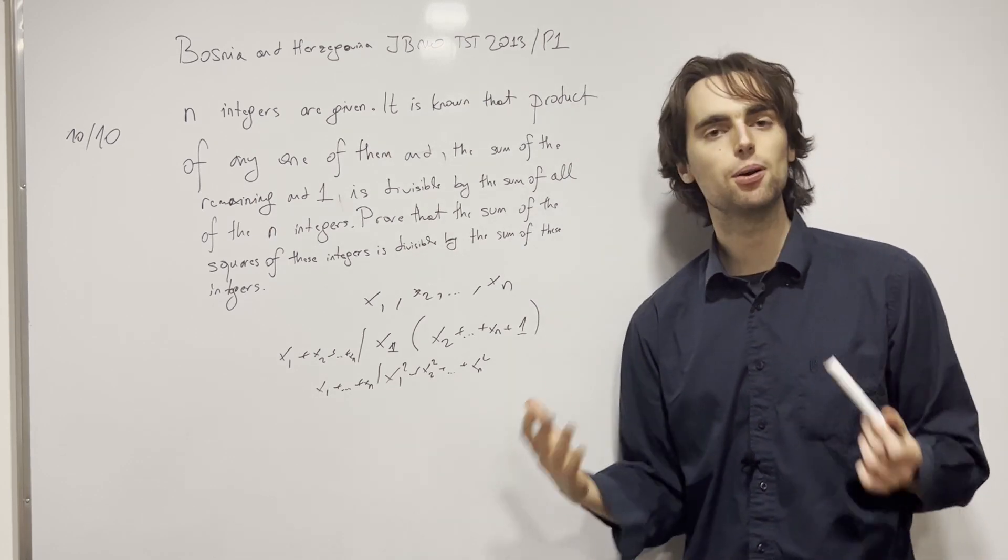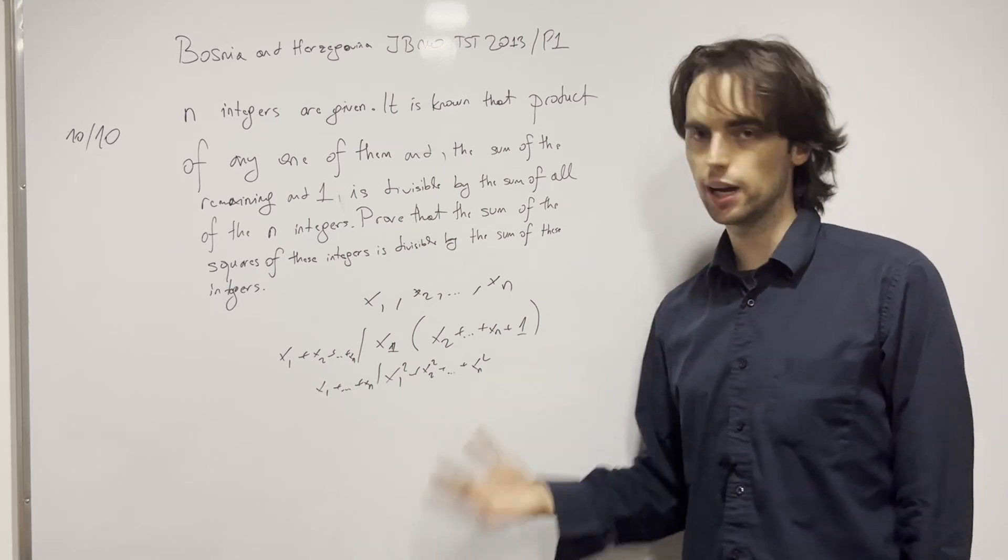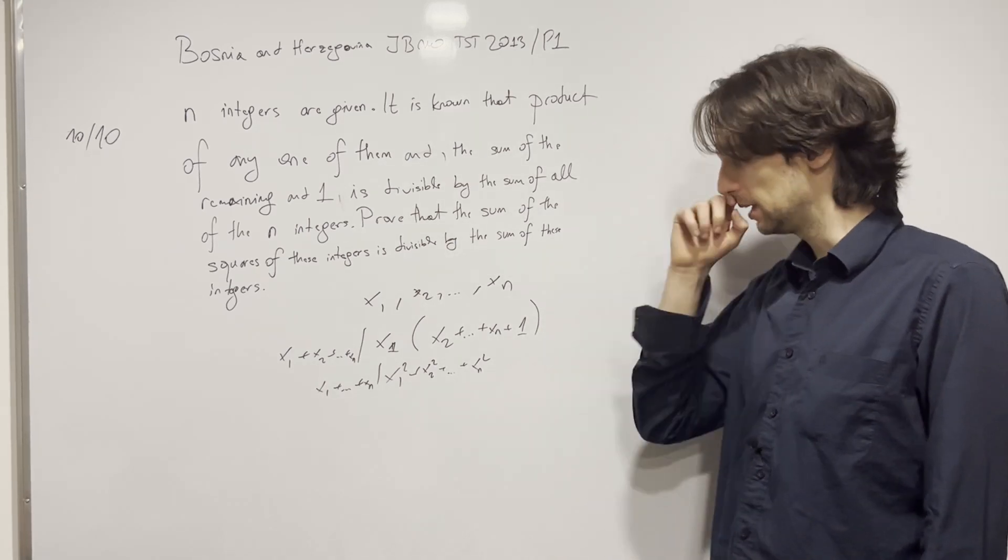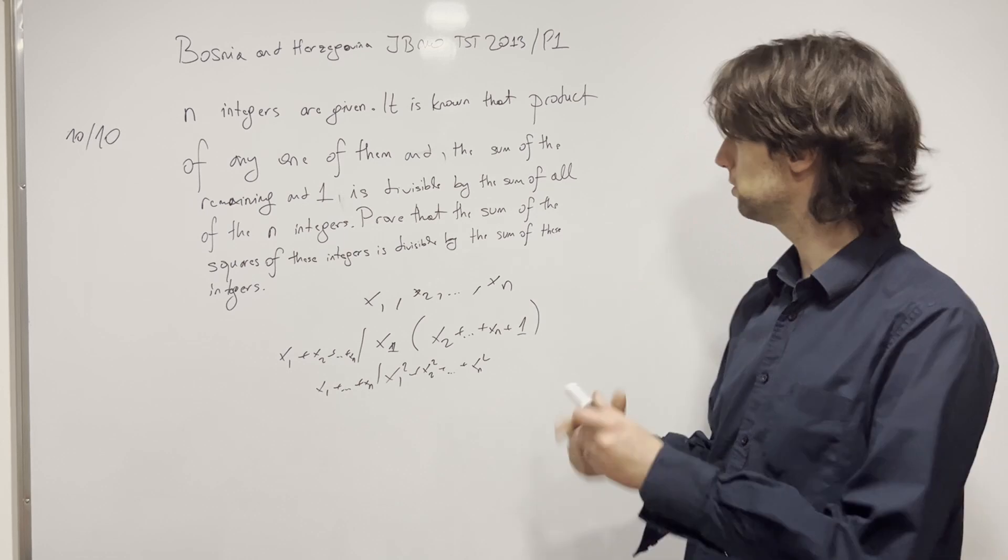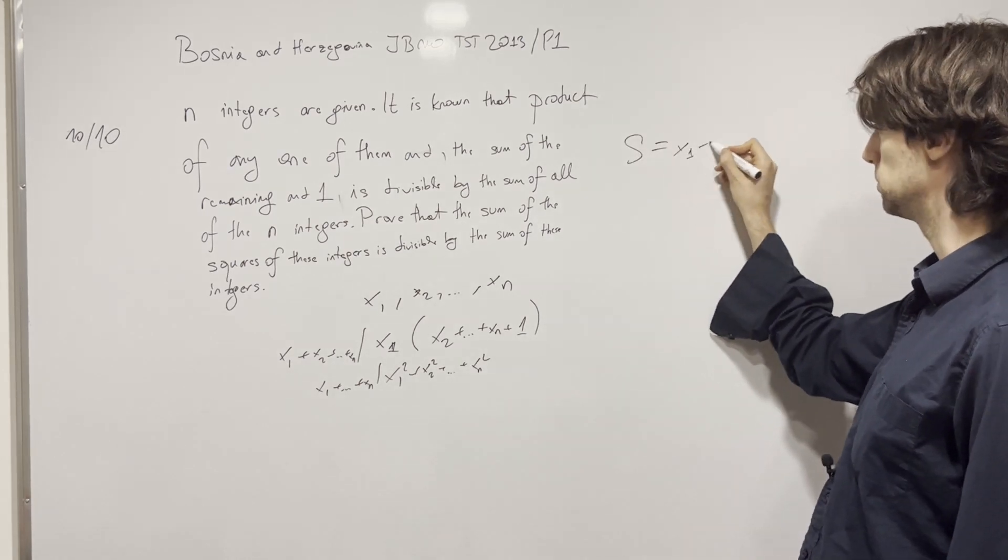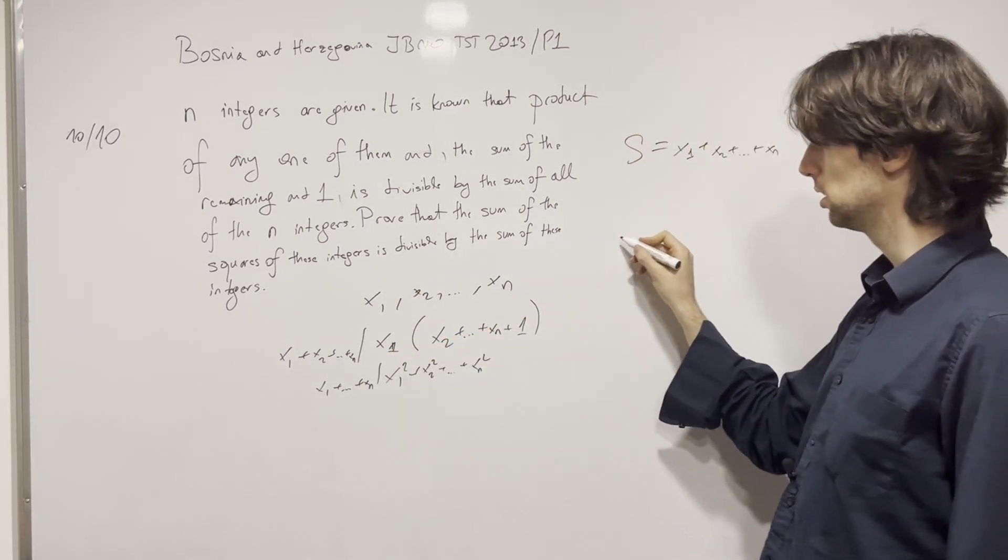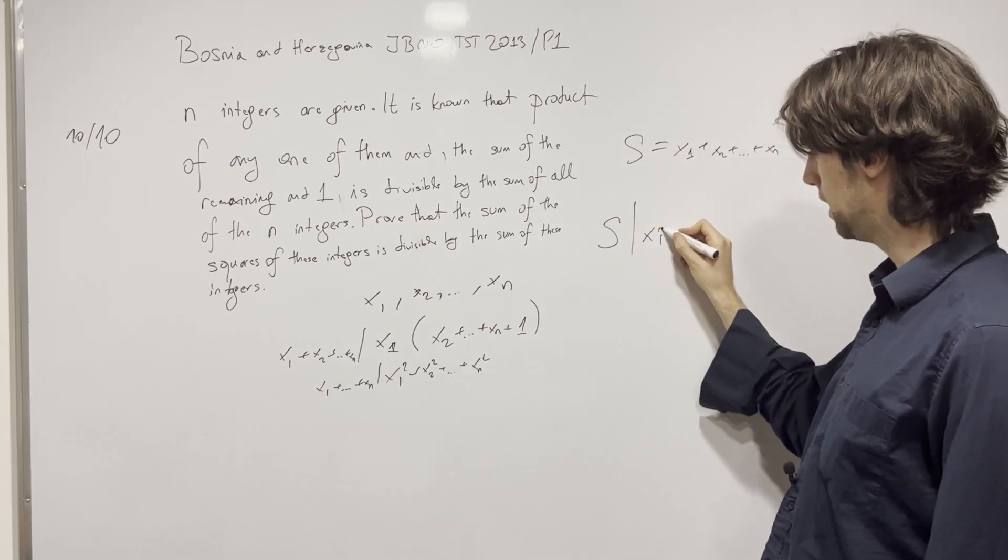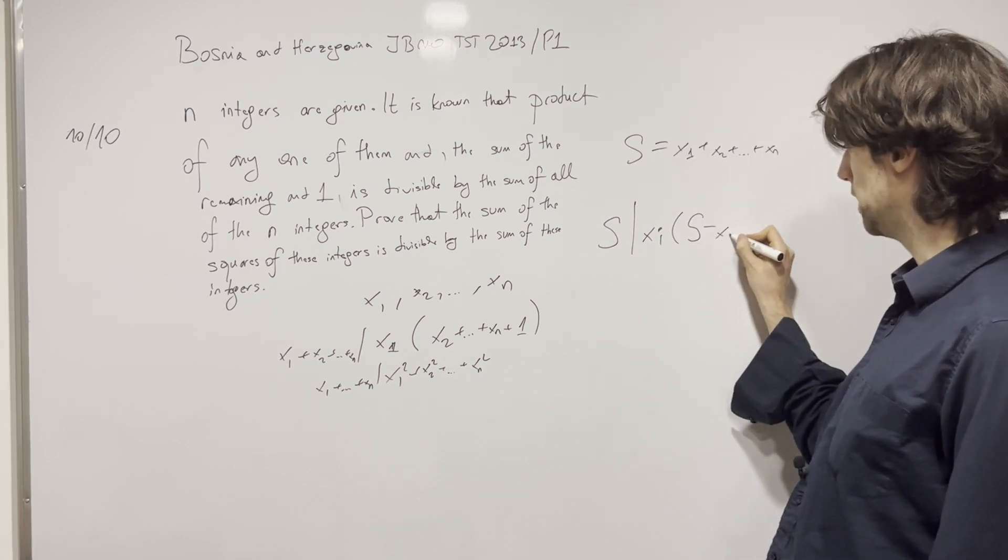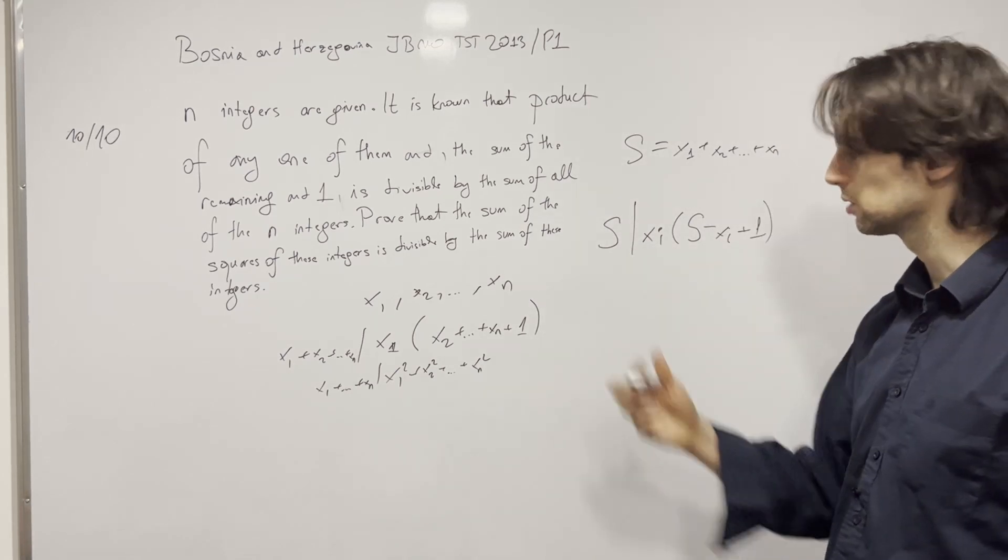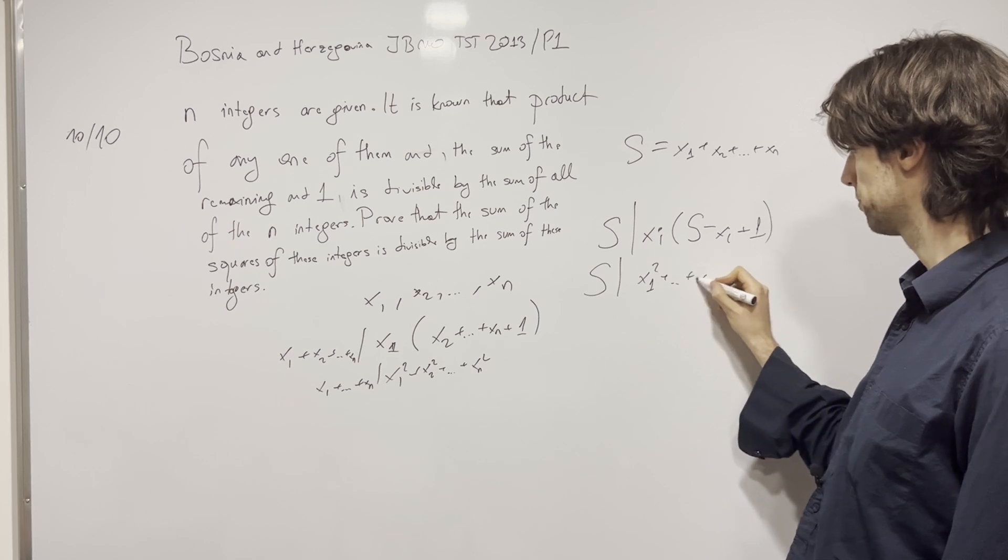So how do you go about this? Being a person who doesn't like to write much can be very helpful in a problem like this. Because I see I have a sum here, a sum here. This is almost a sum that I need. So let me just label this sum s equals x1 plus x2 plus xn. And then I can write this condition as s divides xi times the sum of all of them without xi. That's what the condition rewrites as.